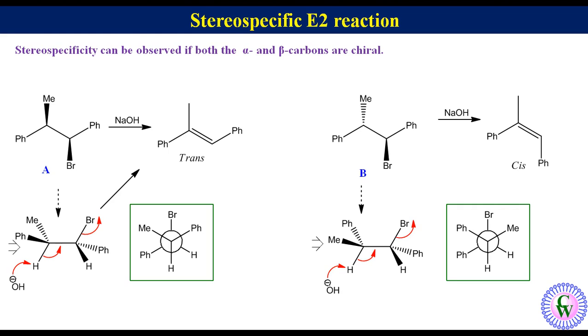Proton abstraction and removal of leaving group will occur like this. In the transition state, both the phenyl groups are below the plane of the paper. So, in the product, these two phenyl groups will be cis and thus product will be cis.